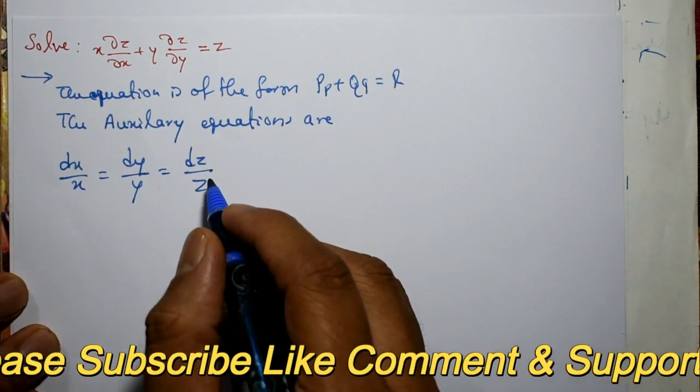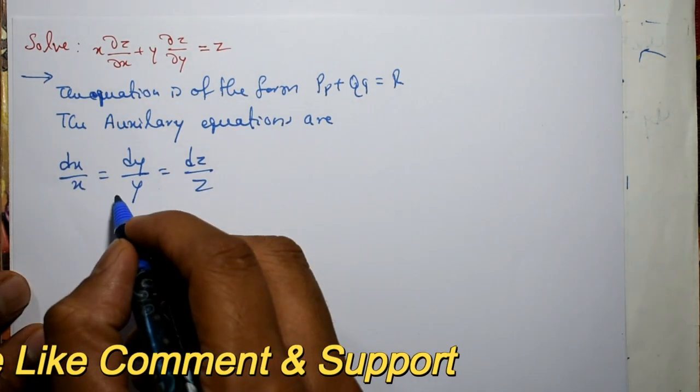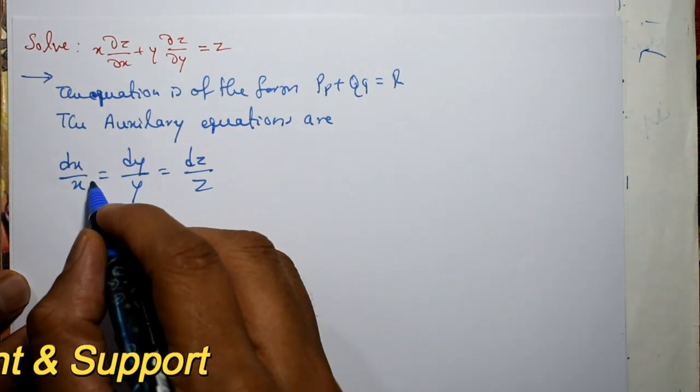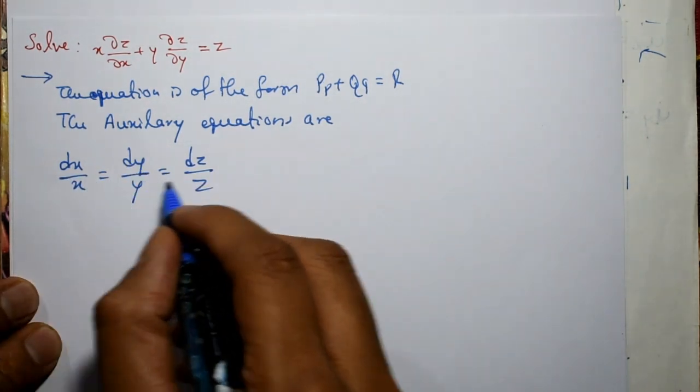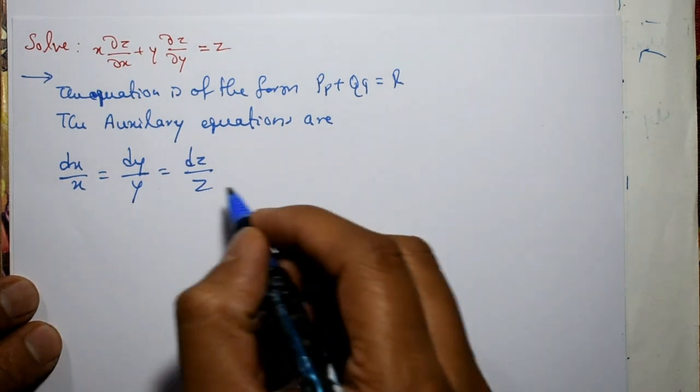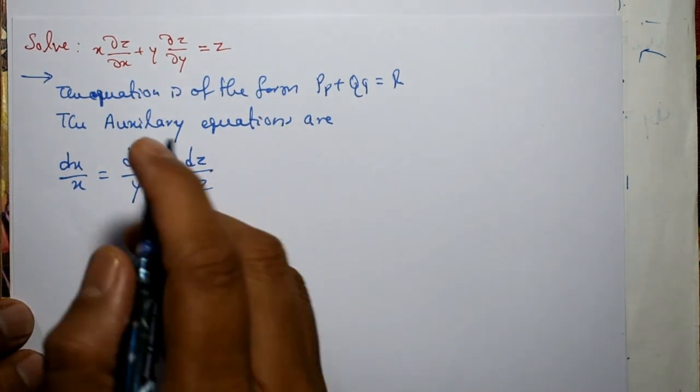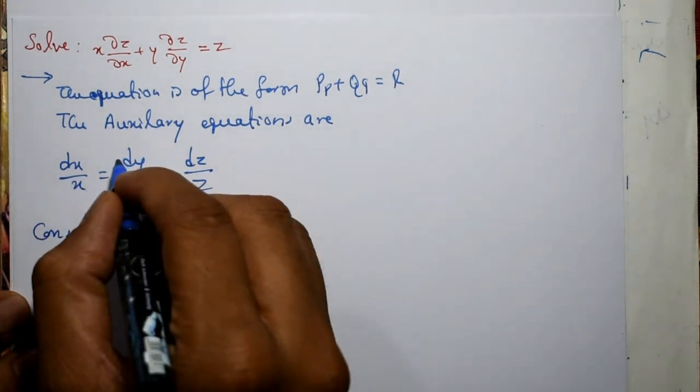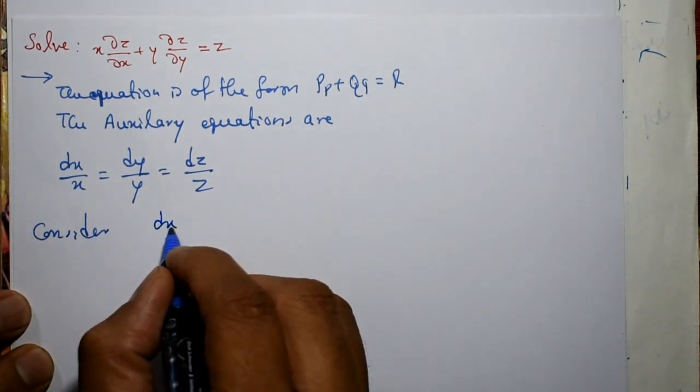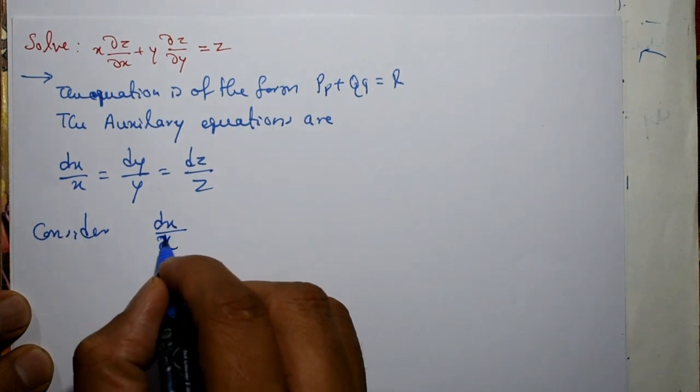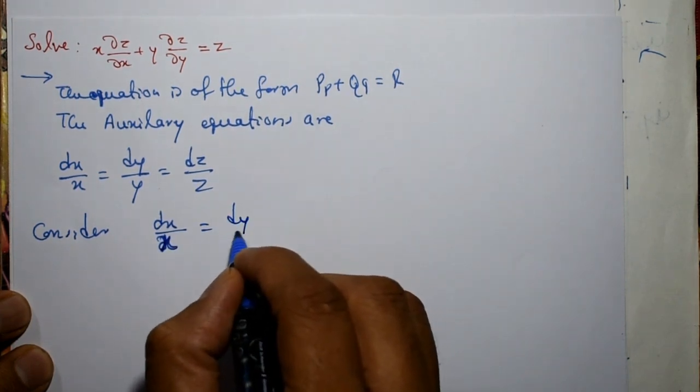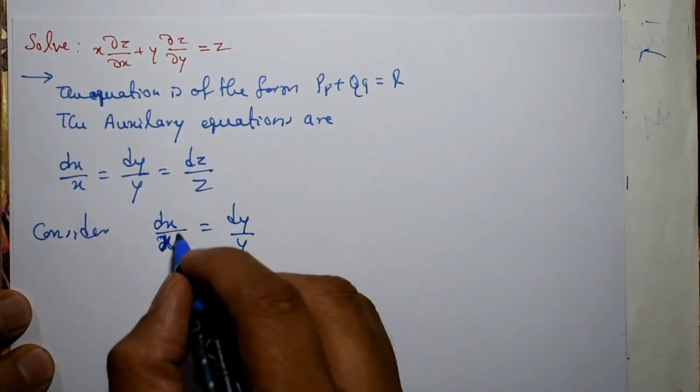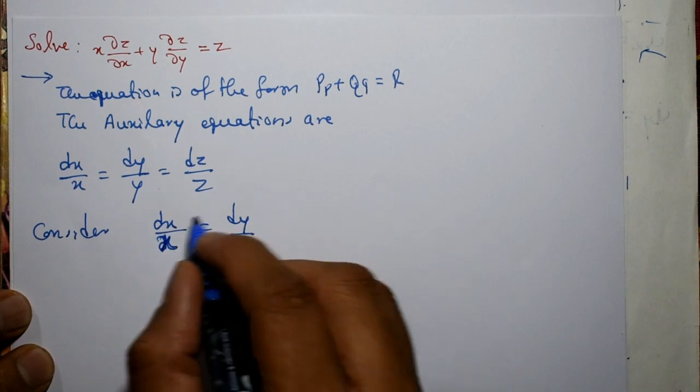Now take suitable any two pair of equations. Then separation of variable and integrate we get the solution. Now consider these two: dx/x = dy/y. So already separated. Now integrate both sides.